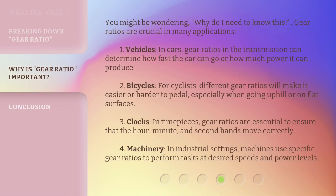You might be wondering, why do I need to know this? Gear ratios are crucial in many applications. First, vehicles: in cars, gear ratios in the transmission can determine how fast the car can go or how much power it can produce. Second, bicycles: for cyclists, different gear ratios will make it easier or harder to pedal, especially when going uphill or on flat surfaces. Third, clocks: in timepieces, gear ratios are essential to ensure that the hour, minute, and second hands move correctly. Fourth, machinery: in industrial settings, machines use specific gear ratios to perform tasks at desired speeds and power levels.